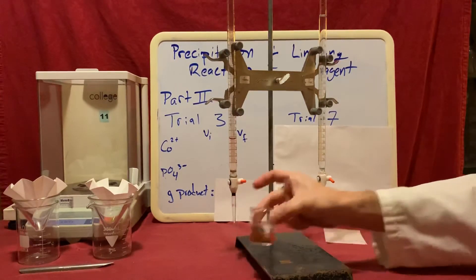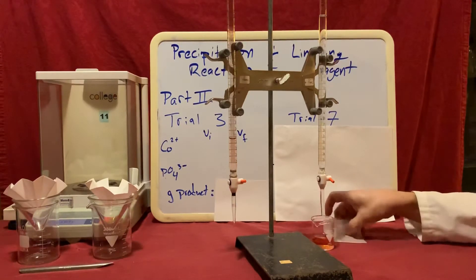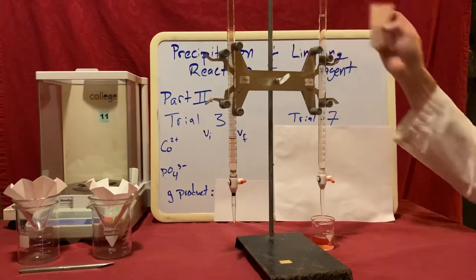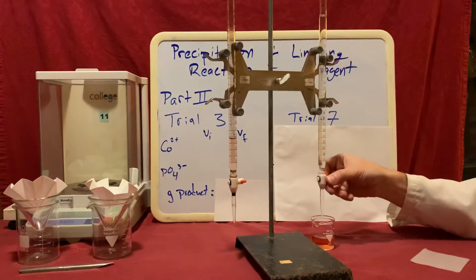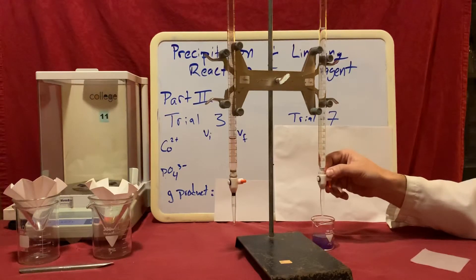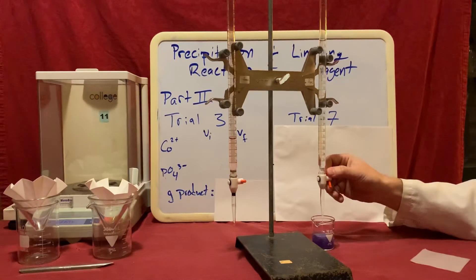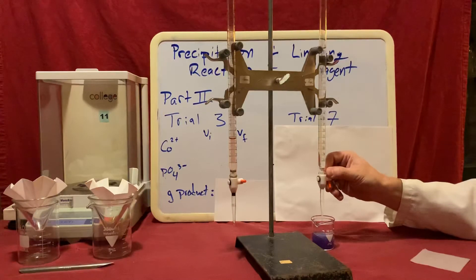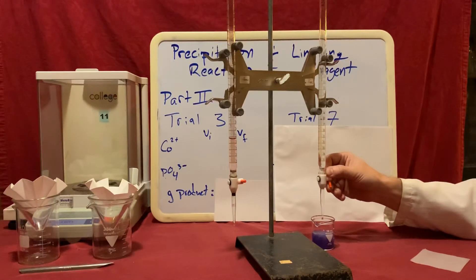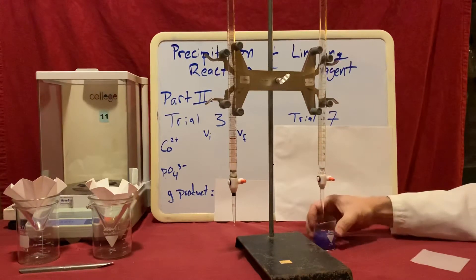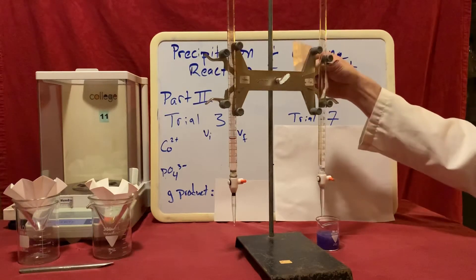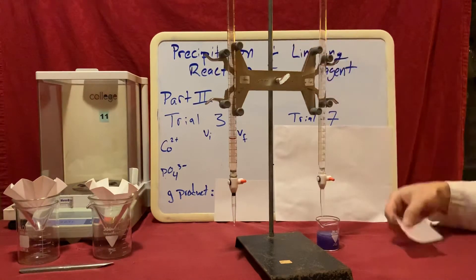I'll then dispense the sodium phosphate solution. I'll note that my initial volume here is 1.00 milliliters. As I dispense the solution, I note that my product starts to appear as a purple solid that precipitates out. I want to add approximately 8 milliliters, so as I started at 1, I want to end as close to 9.00 milliliters, and I'll note that I actually managed to stop at 9.00 milliliters.